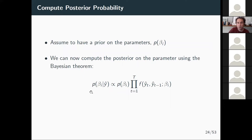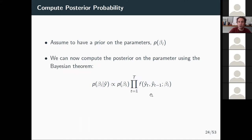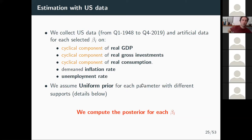We apply this method to US data. Y-hat_T is composed of real GDP, the signal component, real gross investment, real consumption, the mean inflation rate, and employment rate. We use the model to compute the posterior on our parameters using these five time series, producing the artificial counterpart of these time series, computing the joint density, and using those densities to compute the posterior of the data.